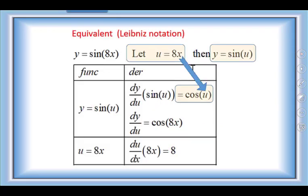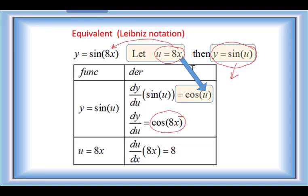Now using the substitution notation for the same question: let u = 8x. My new function becomes y = sin(u) and u = 8x. The derivative of y = sin(u) is dy/du = cos(u). Since my variable is u, I substitute 8x back in to get cos(8x). The derivative of u = 8x with respect to x is du/dx = 8.